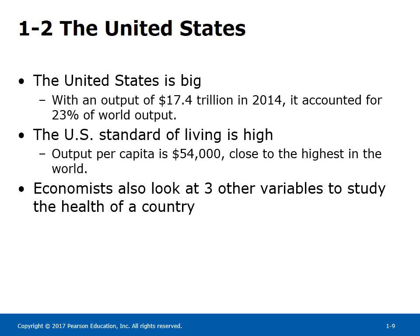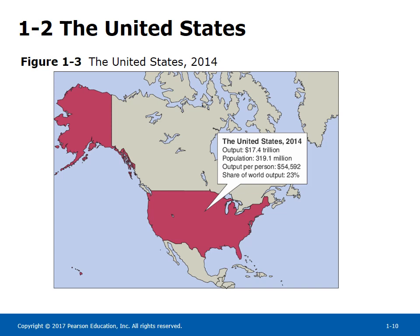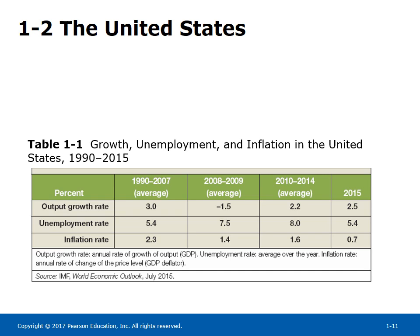Economists also look at three other variables to study the health of a country: output growth, unemployment rate, and inflation rate. A map of the United States and economic statistics for 2014 are shown in Figure 1-3. Output for the whole economy was $17.4 trillion, output per person was $54,592, and the US accounted for 23% of world output. The average output growth rate, unemployment rate, and inflation rate for the pre-crisis years 1990–2007, during the crisis years 2008–2009, and post-crisis years 2010–2014 are shown in Table 1-1.